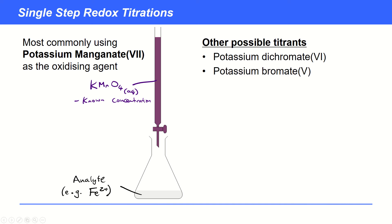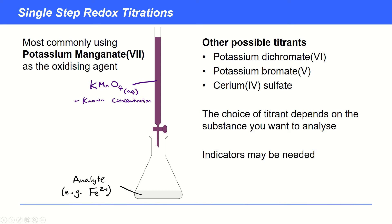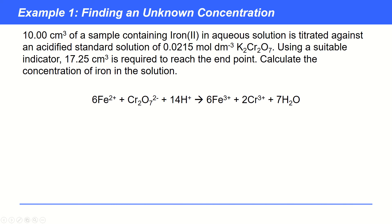Now, just for interest, there are other possible titrants, potassium dichromate, potassium bromate, potassium sulfate, potassium-4 ions, very strong oxidizing agent. And the choice of the titrant depends on the substance that you want to analyze. And sometimes you may need an indicator, but potassium manganate-7 is self-indicating. So let's get into an example of this.